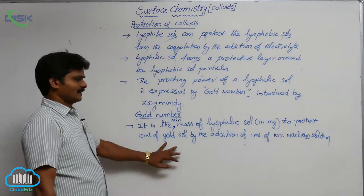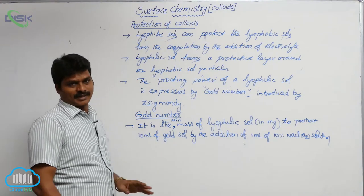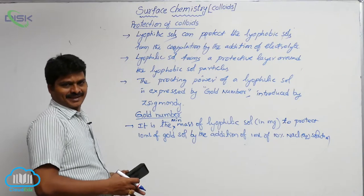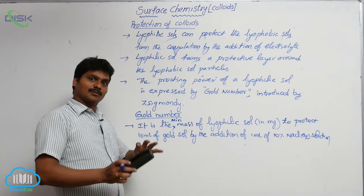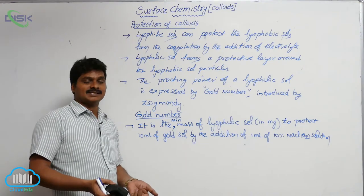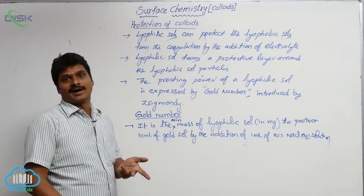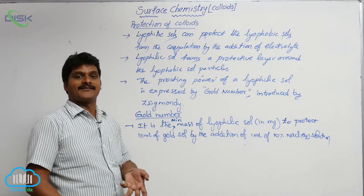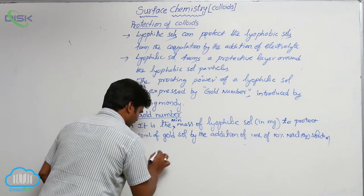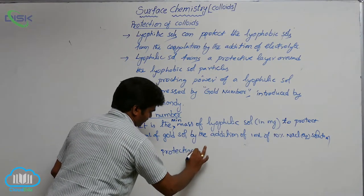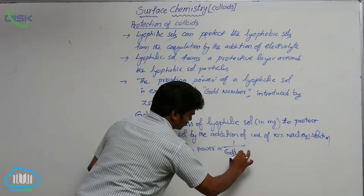Now, gold number is the measure of the protecting power of lyophilic salt. The protecting power and gold number are inversely proportional to each other.